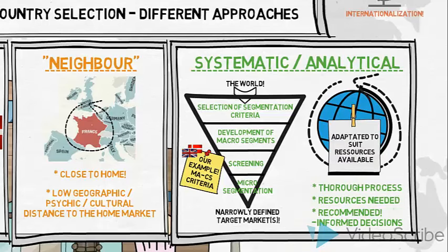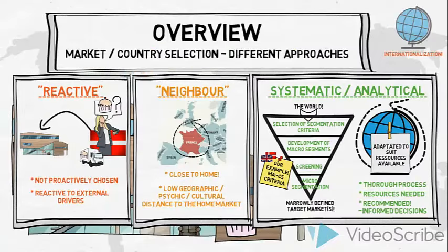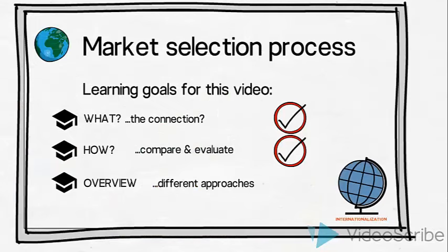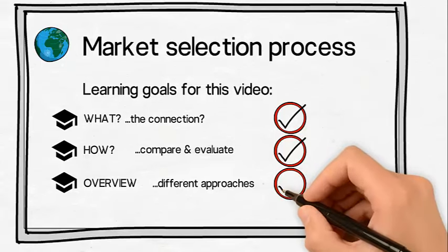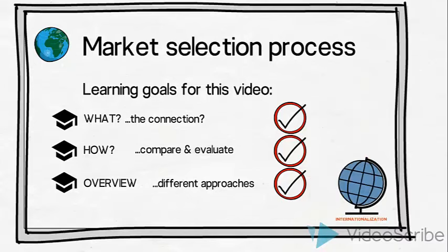The extent and depth of this approach is often adapted to suit the resources available to the company. Often, when companies select new markets to enter, they use a combination and adaptation of these different approaches to suit their needs and available resources. The systematic approach, in a more or less detailed version, is the one usually recommended by marketers. We have now completed the learning goals of this video by providing an overview of the different approaches to a market selection process.